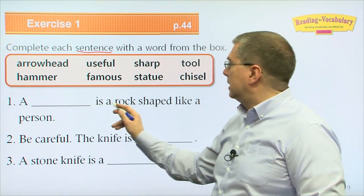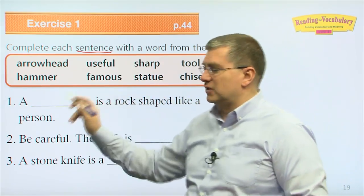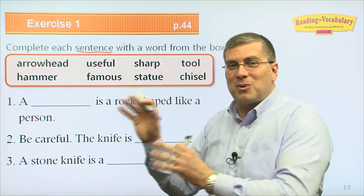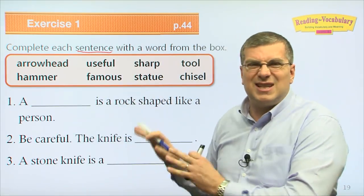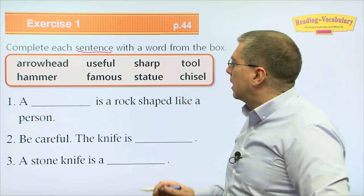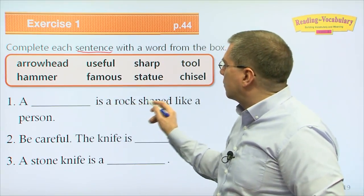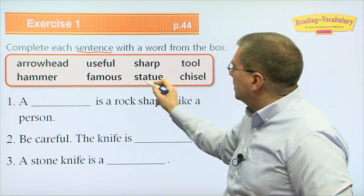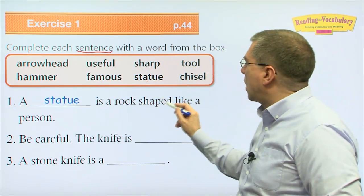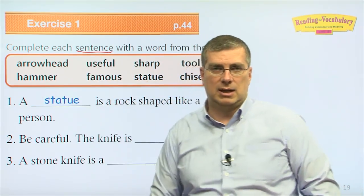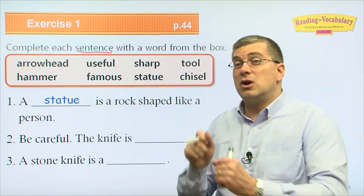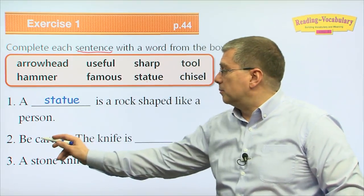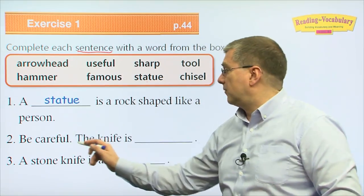Number one: a blank is a rock shaped like a person. We saw that rock — it was very old. What kind of rock is shaped like a person? Looking through our words, the answer is: a statue is a rock shaped like a person. Remember, it takes a very good artist to shape a rock like a person.